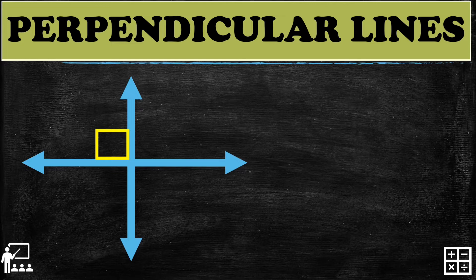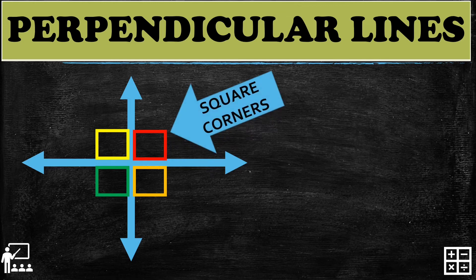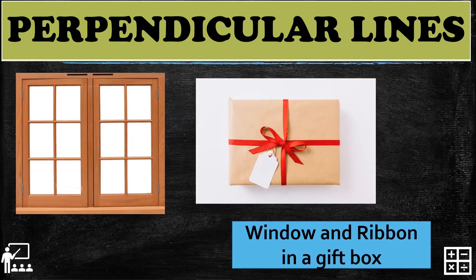Perpendicular lines are lines that intersect each other and form square corners. The square corners can be on the right, left, top, or bottom. If you see square corners, the answer is perpendicular lines; if there are no square corners, it is intersecting lines. Real-life examples include a window and a ribbon on a gift box.